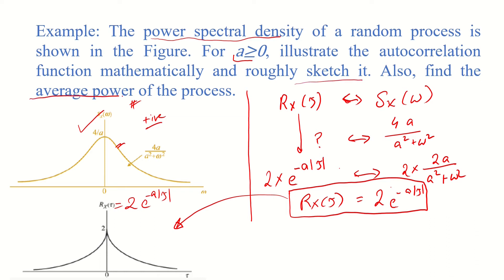Now for the average power of this process, the formulation is that the power is simply 1 over 2π times the integration from minus infinity to infinity of the power spectral density Sx(ω) dω. So we have 1 over 2π times 4a, and then the integration minus infinity to infinity of 1 over a squared plus omega squared dω.